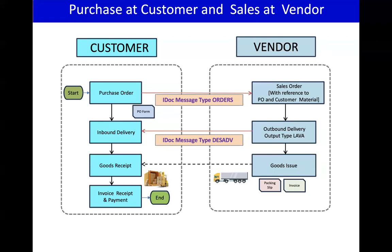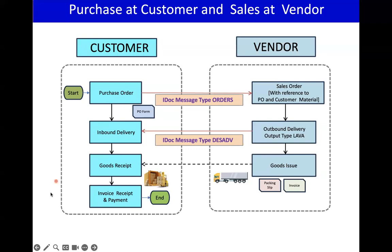Most of you may be aware, but some people might not be aware about this process. We — meaning the company which is ordering — are the customer, and the vendor is going to provide the materials to the customer. So I'm using these two words: the customer is procuring the materials and the vendor is providing them.